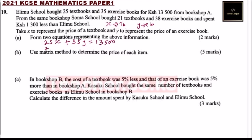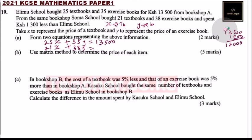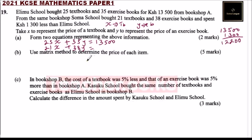For Summer school, they bought 21x textbooks plus 38y exercise books. They spent 1,300 less than Erimu, so that is 13,500 minus 1,300, which gives us 12,200. So those are the two equations you can form from the given information.